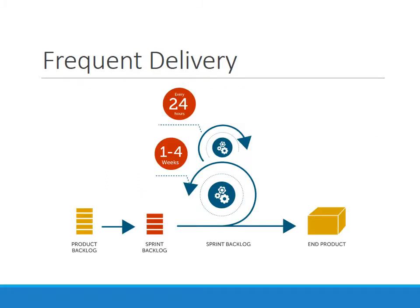Let's take a look at one aspect of what frequent delivery looks like. You have your product backlog, work's coming in, those things are getting refined, and then the team decides, based on priority, what it wants to do in the upcoming sprint, and so it builds out its sprint backlog. The sprint gets worked over a period of one to four weeks, and at the end of that sprint, you have working software. That in itself sounds like you're meeting the goal — you're delivering working software early and often because you're doing it every one to four weeks.